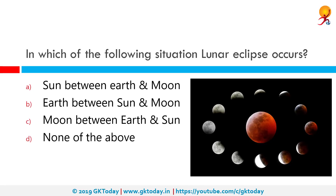In which situation does a lunar eclipse occur? The correct answer is when earth is between the sun and the moon. Earth comes in between the sun and the moon, so sunlight doesn't reach the moon and earth's shadow falls on the moon. As a result we can't see the moon, which is a lunar eclipse. A lunar eclipse can occur only on the night of a full moon.